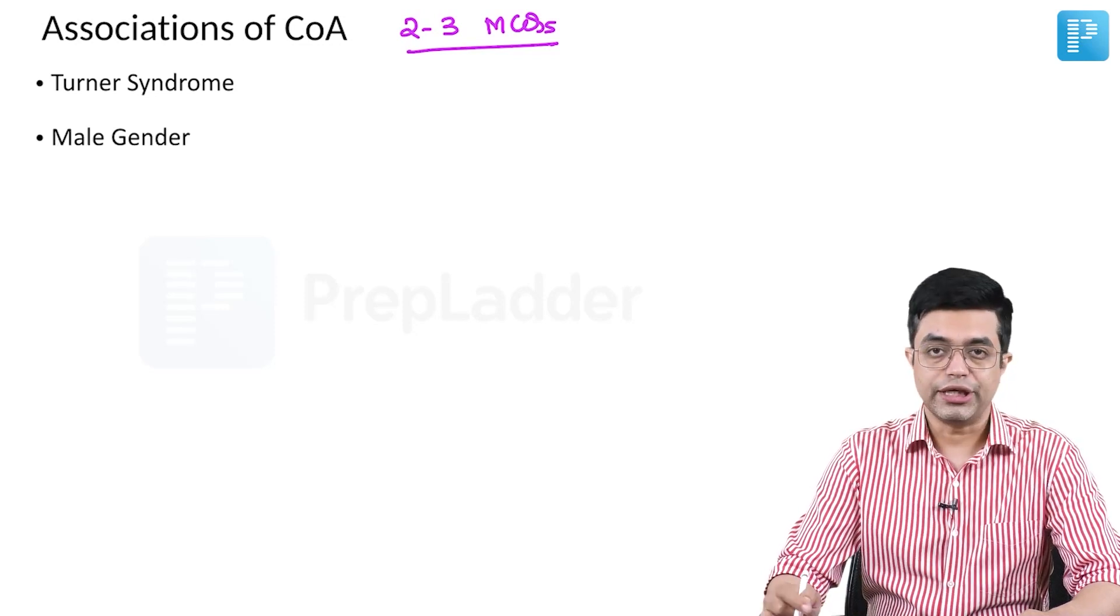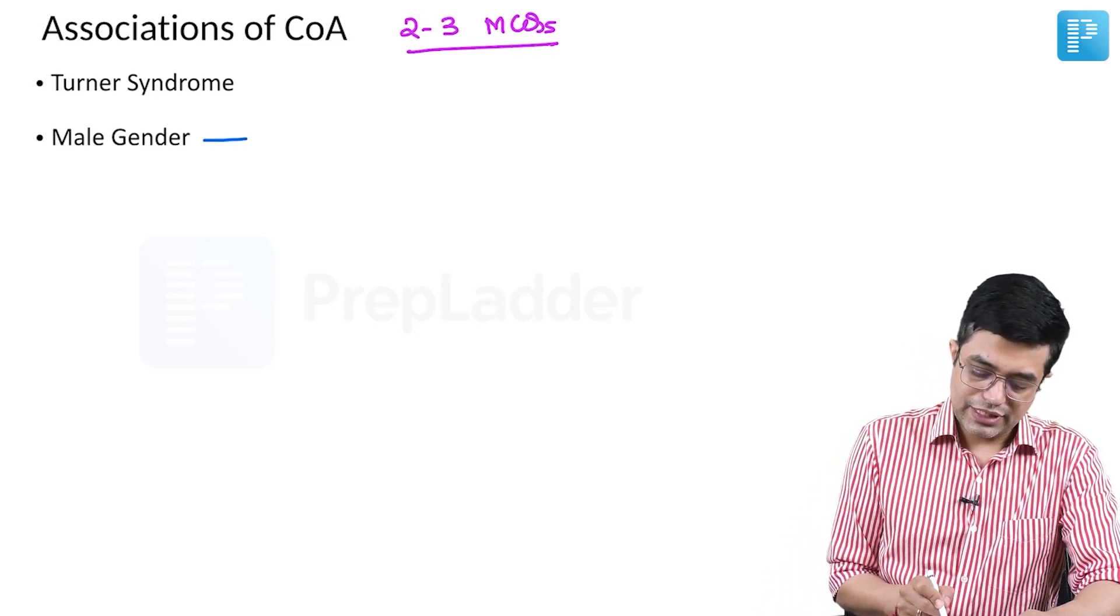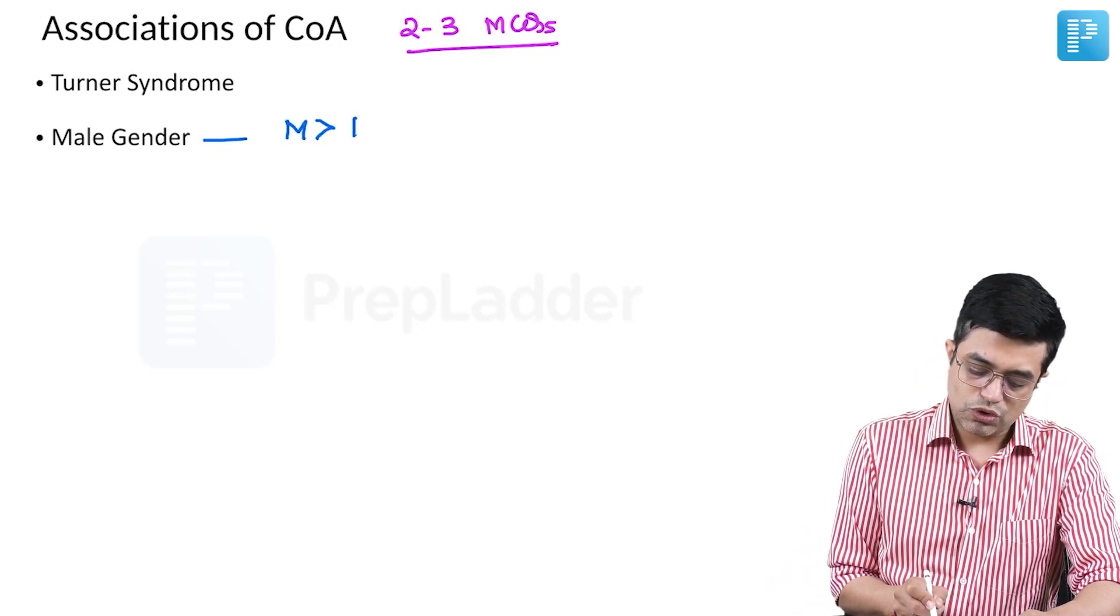Second is male gender. Coarctation of aorta according to Nelson, males are twice more commonly affected than females.